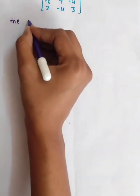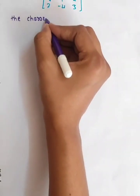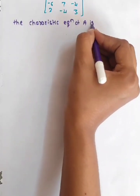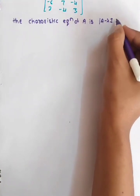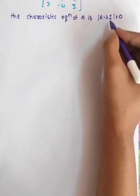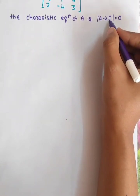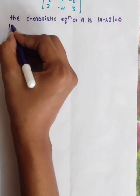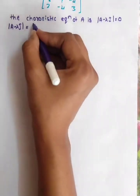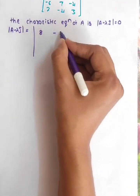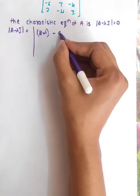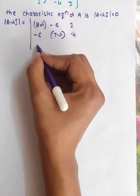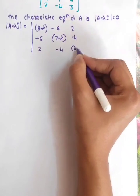The characteristic equation of A is |A minus lambda I| equals 0. Since I refers to the identity matrix, we multiply by lambda and subtract from matrix A. We get A minus lambda I equals: 8 minus lambda, minus 6, 2; minus 6, 7 minus lambda, minus 4; 2, minus 4, 3 minus lambda.